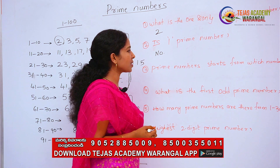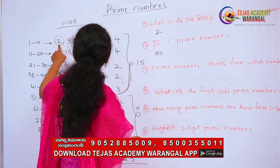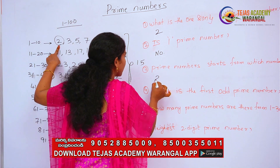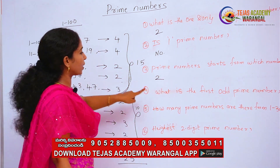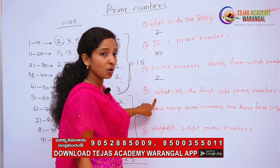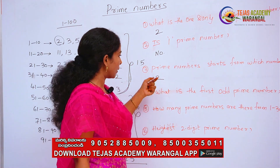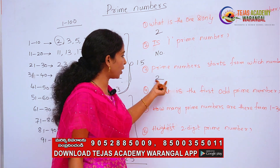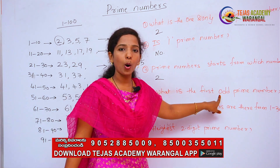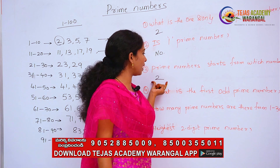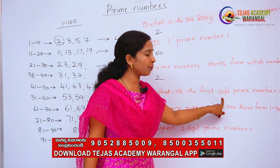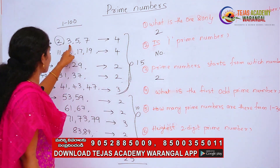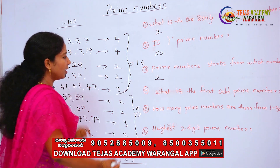From which number do prime numbers start? Prime numbers start from 2. What is the first odd prime number? Since 2 is an even number, the first odd prime number is 3. So the answer to 'what is the first odd prime number' is three.